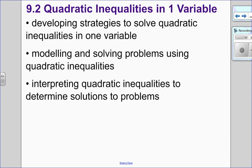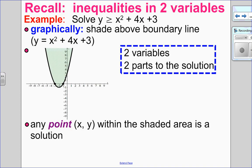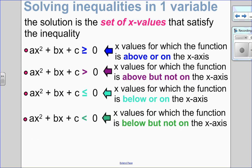That was quadratic inequalities in two variables. Now we're going to look at quadratic inequalities in one variable. With two variables, we had y greater than or equal to x squared plus 4x plus 3 — there's a y and an x, and the solution is an area of points. With one variable, there is no y, only x, so the solution is only a set of x values.